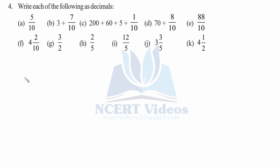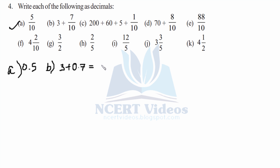Question: Write each of the following as decimals. Five over ten can be written as a decimal — because we have one zero in the denominator, we place it at the first decimal place, so it becomes 0.5. Similarly, for part B, three is the whole part — we don't disturb it. Three plus 0.7 gives you 3.7. Just count the number of zeros in the denominator.